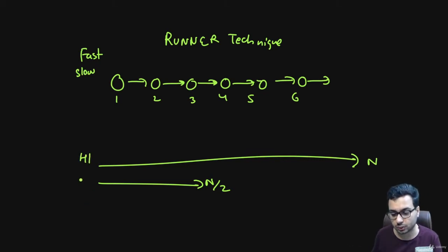H1 and H2 - H1 runs at 2x speed and H2 runs at x speed. So when H1 reaches the end of the race, H2 will reach the midpoint of the race. This is what we are going to do.